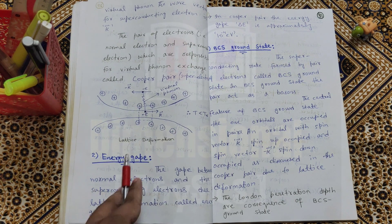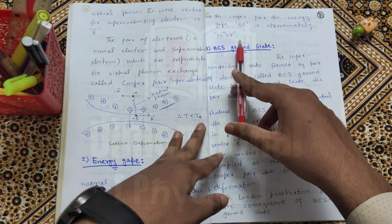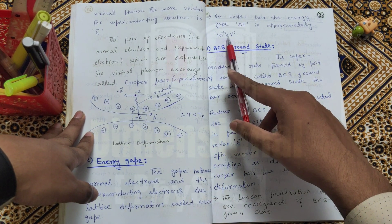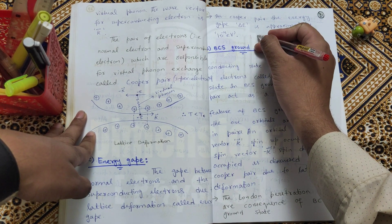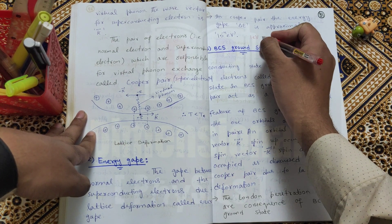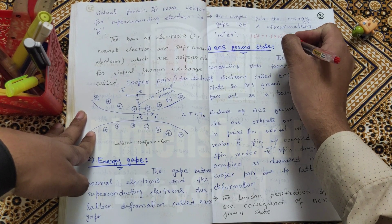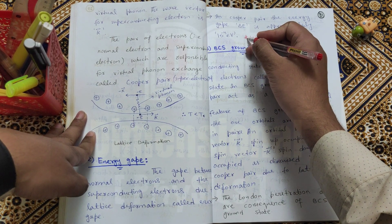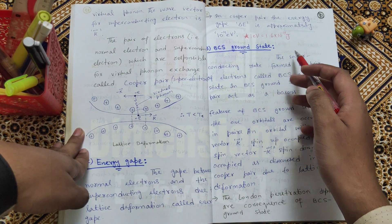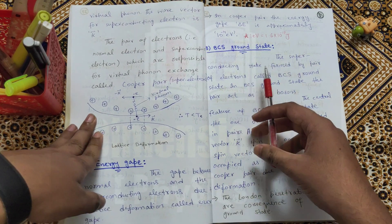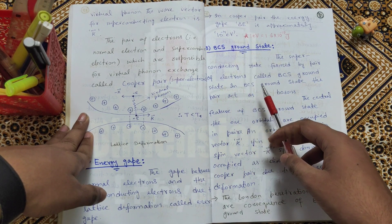The value of the energy gap is approximately 10 to the power minus 4 electron volts. For reference, 1 electron volt equals 1.6 × 10⁻¹⁹ joules. The superconducting state is the ground state. The superconducting state formed by a pair of electrons is called the BCS ground state.